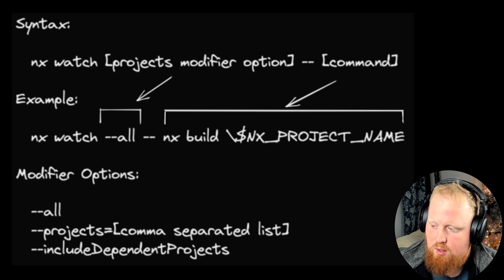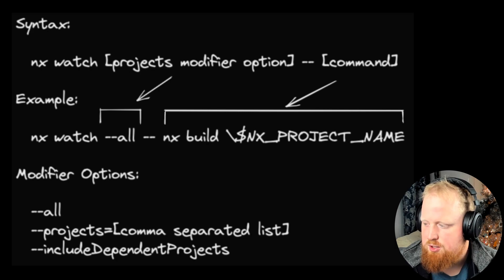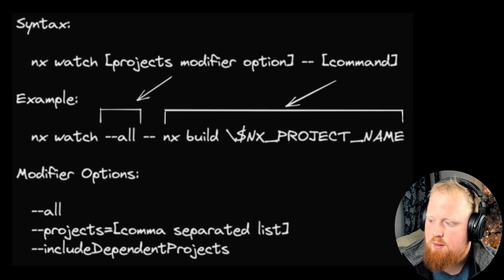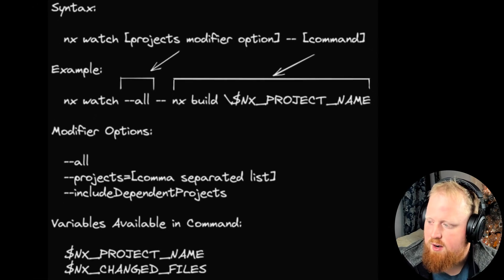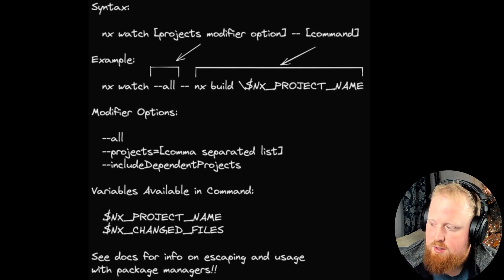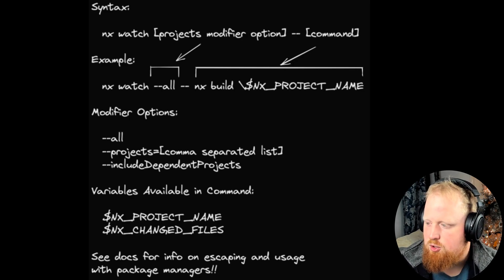For the modifier option, you can use --all to watch all projects in your workspace, or you can filter down to specific projects with the --projects option, which can also be used in conjunction with a --include-dependent-projects option as well. The NX watch command will support the variables $NX_PROJECT_NAME and $NX_CHANGED_FILES. This feature opens the door for nice developer workflows where we can provide an out-of-the-box mechanism for NX to run relevant tasks on save.